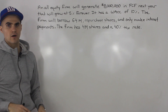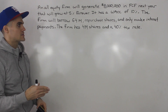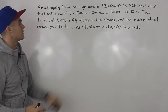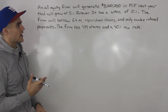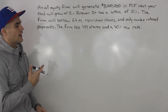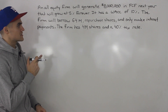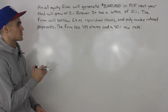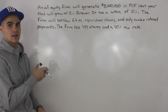Now in this particular video, I want to go over the effects on the share price when a firm increases leverage, and I'm going to do so through this scenario. An all-equity firm will generate $8 million in free cash flow next year that will grow at 5% forever. It has a weighted average cost of capital of 10%. The firm will borrow $64 million in debt, repurchase shares, and only make interest payments. The firm has 4 million shares and a 40% tax rate.